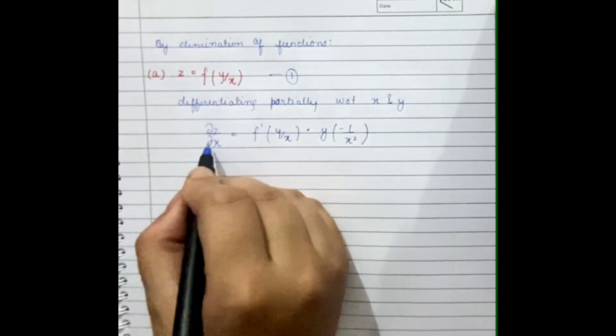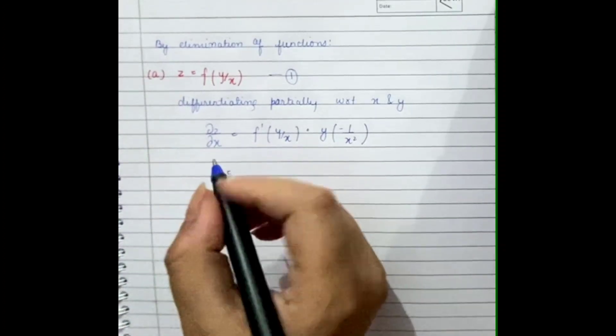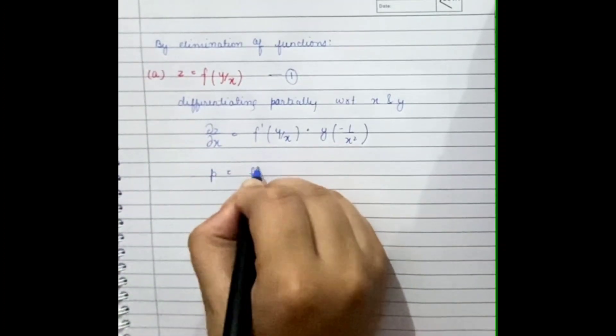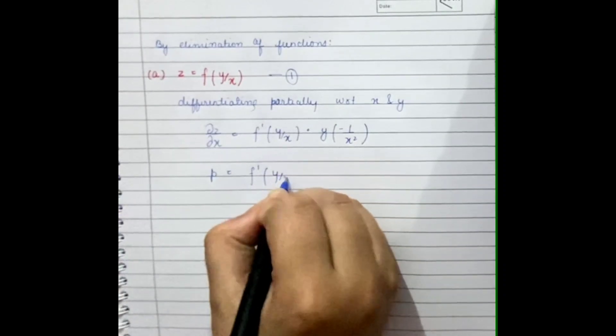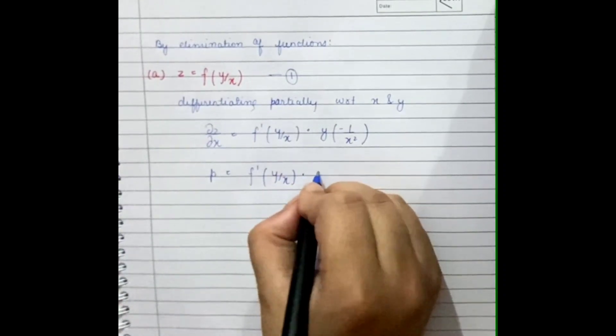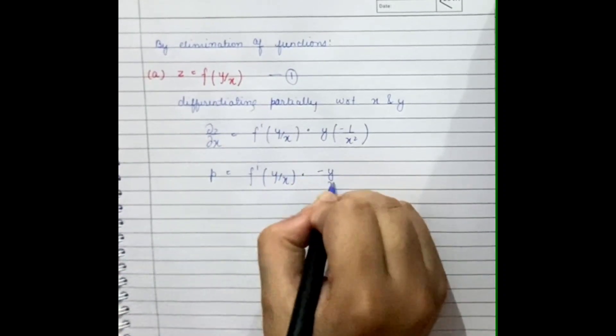So we can represent this by P. We will get P will be equal to f dash y by x into minus y x square.